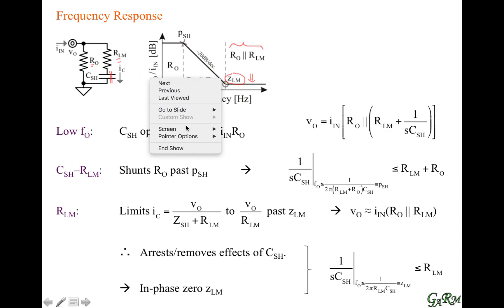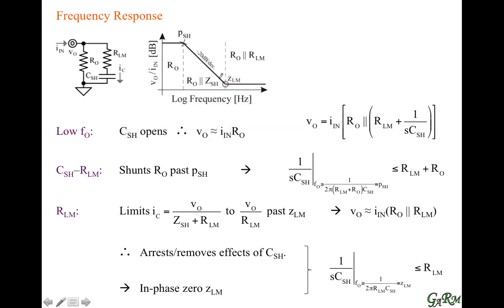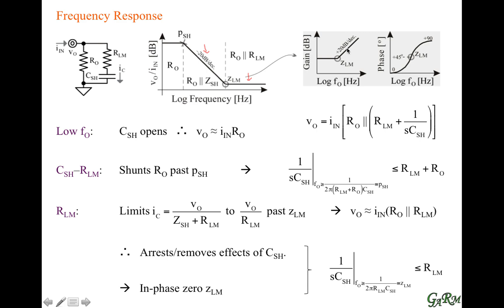To see the individual effect of that zero: the gain was dropping at 20 dB per decade, and now the gain is flat. That's equivalent to saying we added 20 dB per decade past that transition point. The zero effectively adds 20 dB per decade. To be more precise: the current-limiting resistor removes the effect of the capacitor, which was reducing the gain at 20 dB per decade. Removing that reduction is like adding gain. The current-limiting resistor doesn't add gain — it removes the effect of the capacitor — but its individual effect is to add 20 dB per decade.